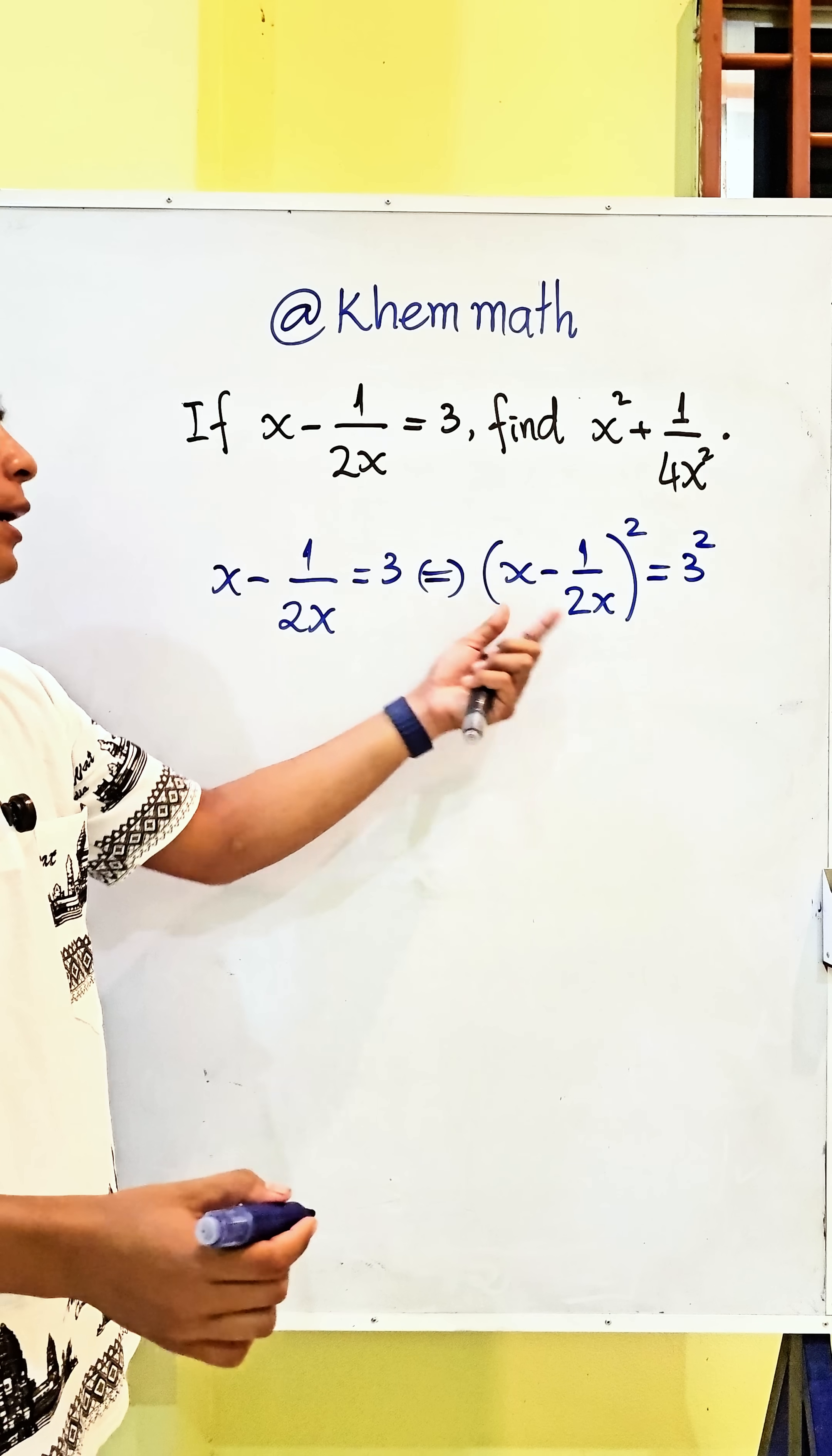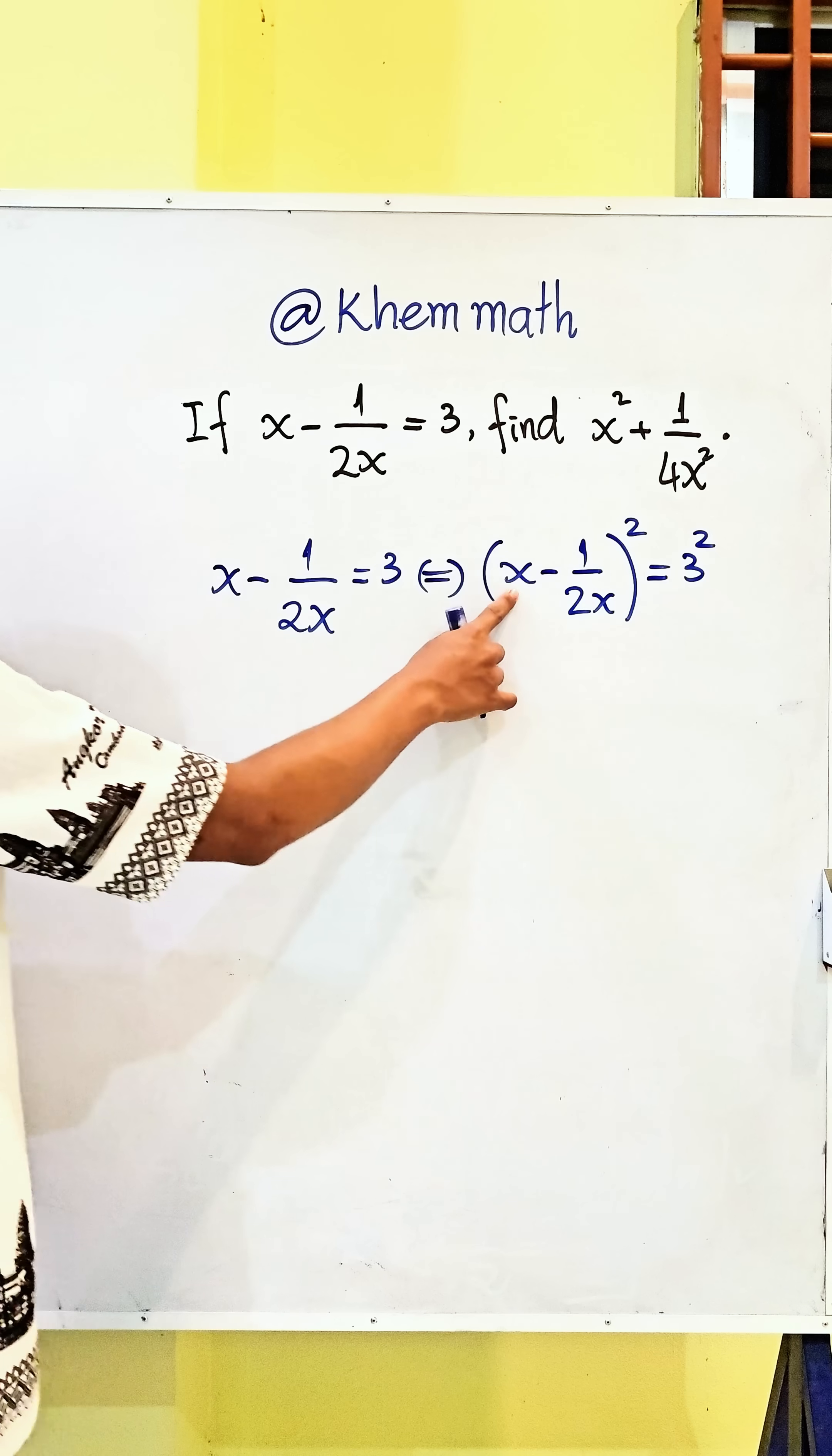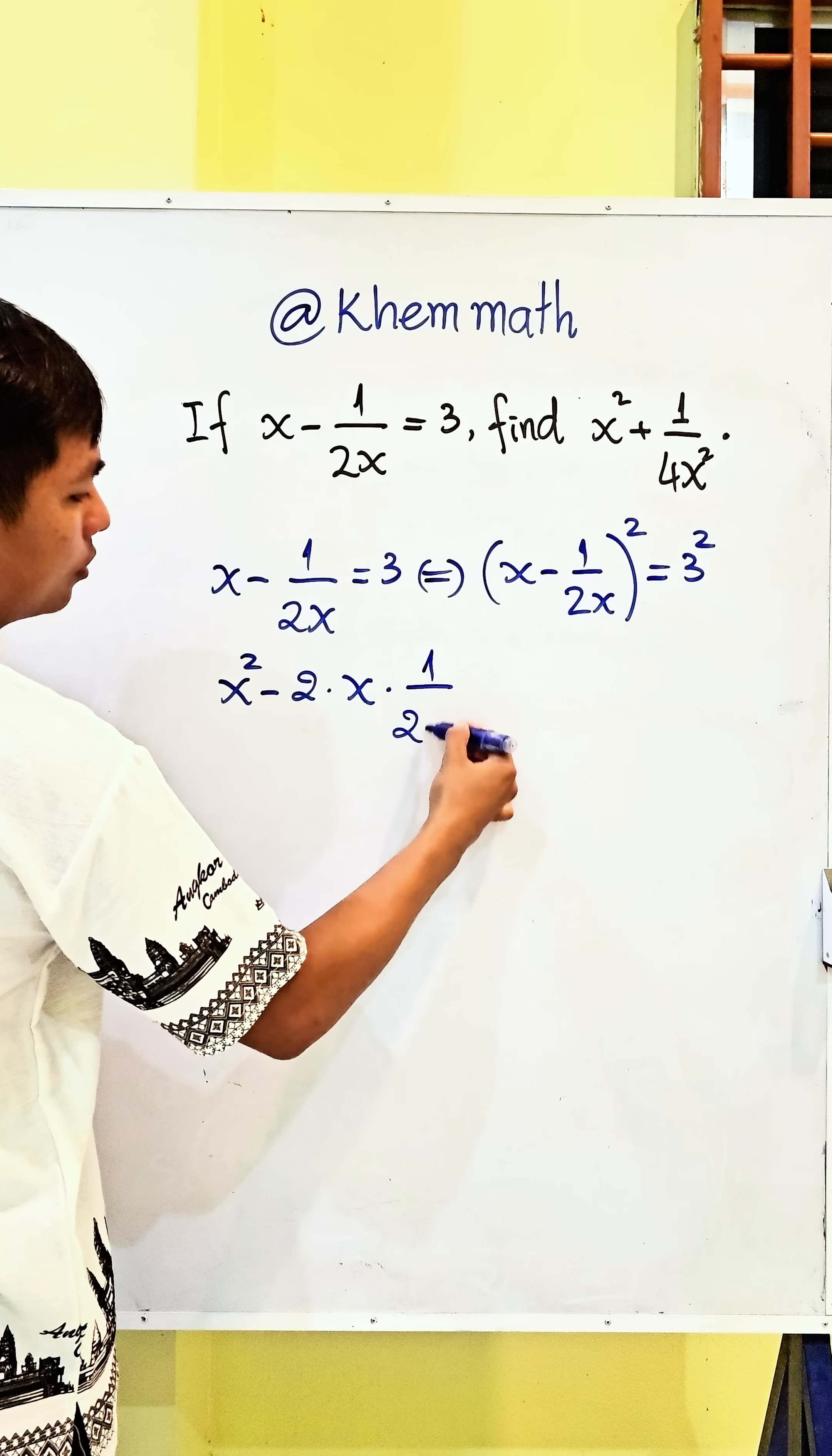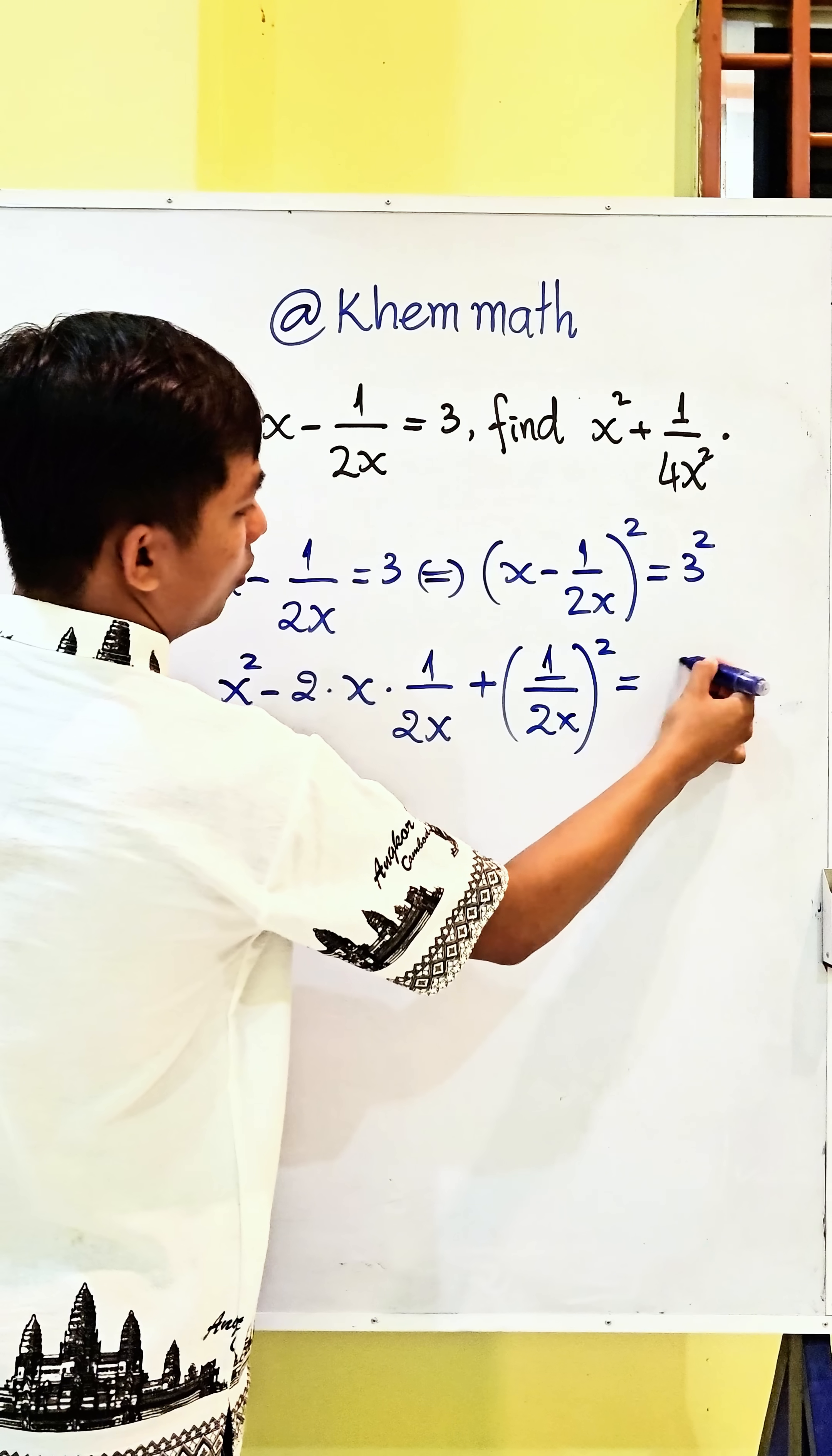And here we use the formula a minus b squared equals a squared minus 2ab plus b squared. So here we get x squared minus 2 times x times 1 divided by 2x, plus 1 divided by 2x squared, equals 9.